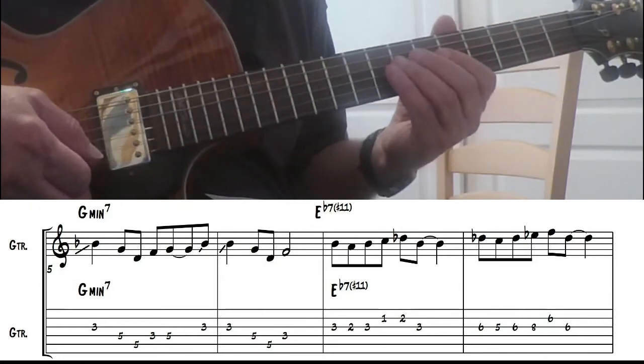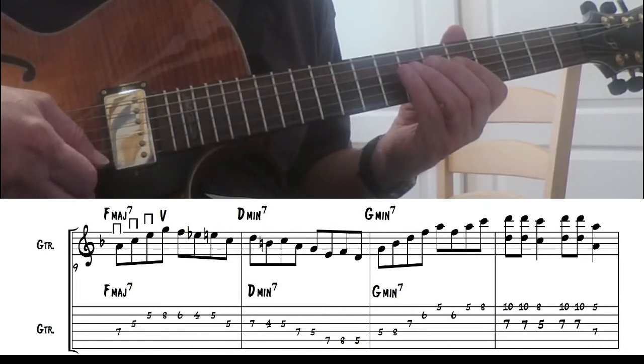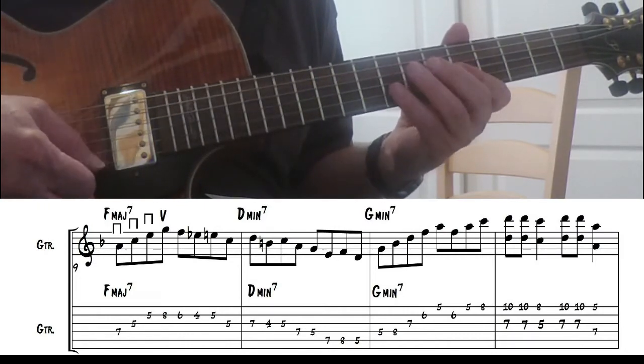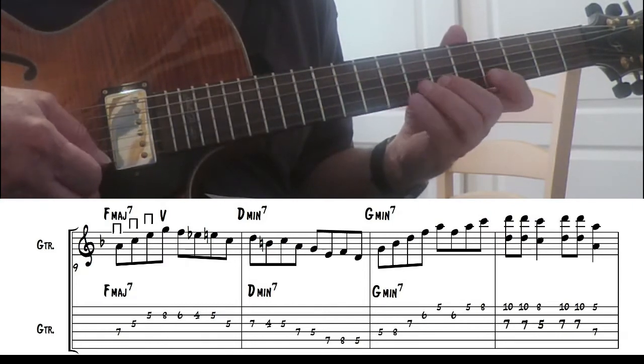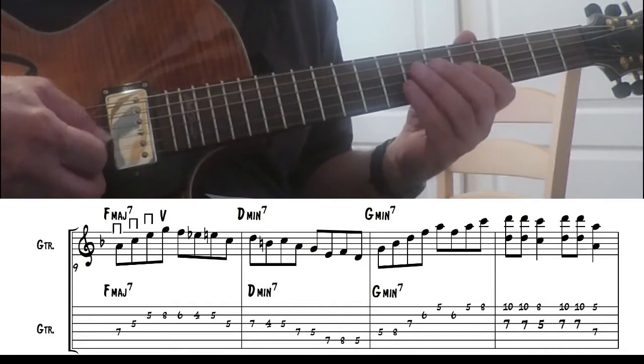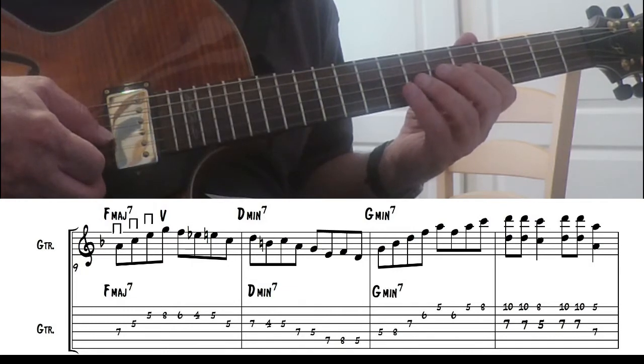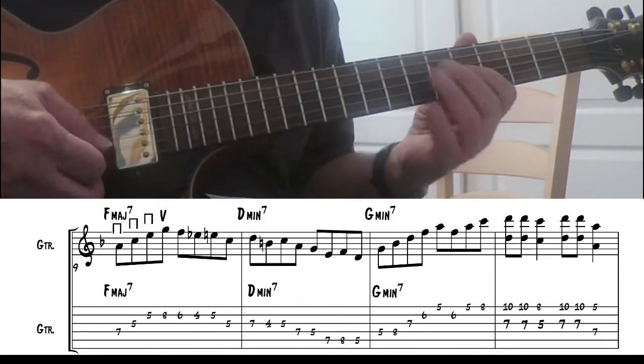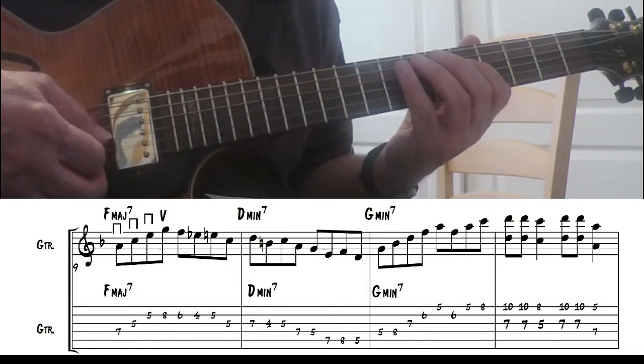Okay, on this Fmaj7 I'm using an Am7. I'm substituting an Am7 arpeggio on the first two beats. And then I'm doing an enclosure around the 7th. Then on Dm7 I'm doing an enclosure around the 7th also. And then around the 3rd.